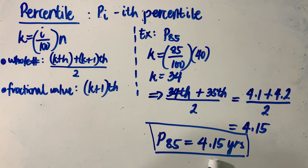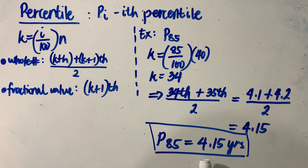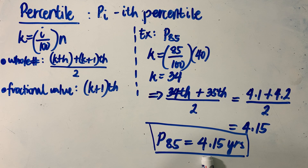The 85th percentile of the given data involving the 40 car batteries is equal to 4.15 years. This means that 85% of the 40 car batteries in our distribution would have a lifespan lower than 4.15 years. That is how we interpret the concept of the 85th percentile given in the context of the data values in our distribution.